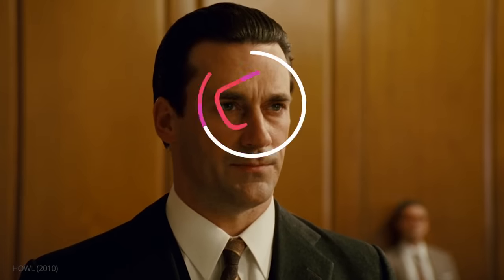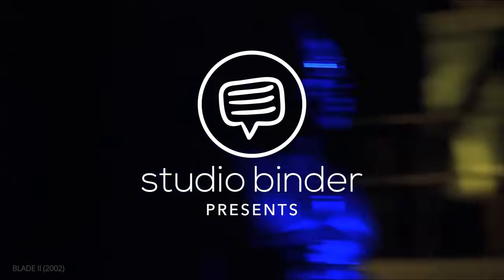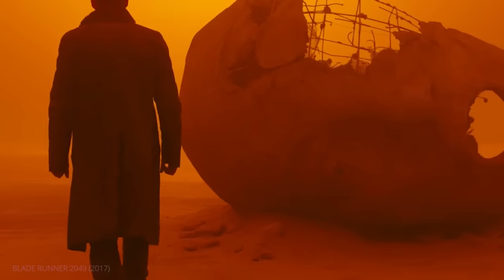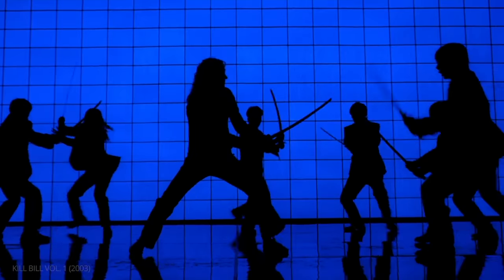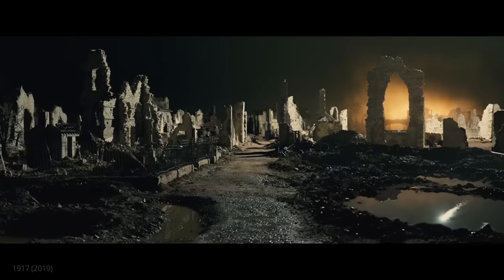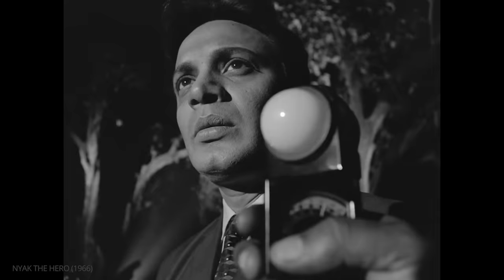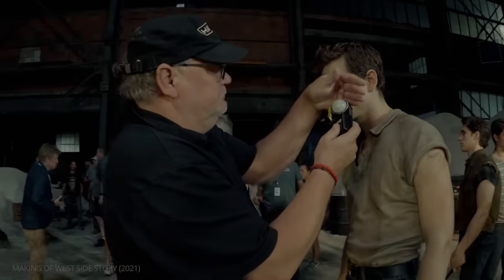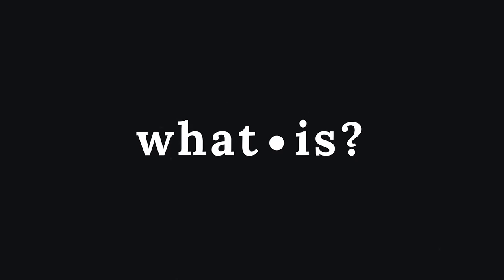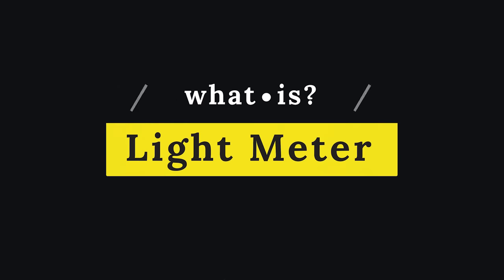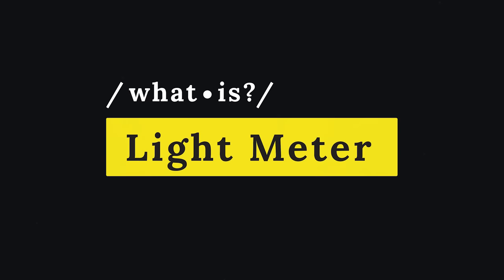Let there be light. Cinematography is often described as painting with light. The primary tool in this process is the light meter, which to this day helps filmmakers create stunning images. This is: what is a light meter?